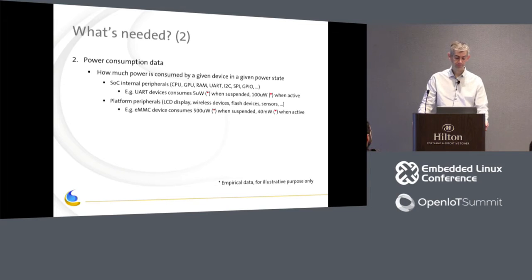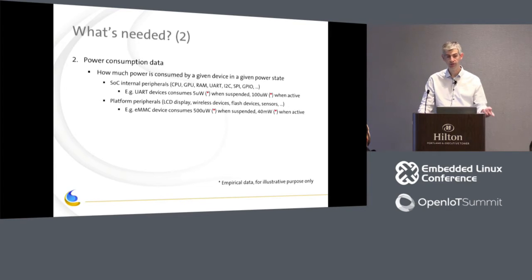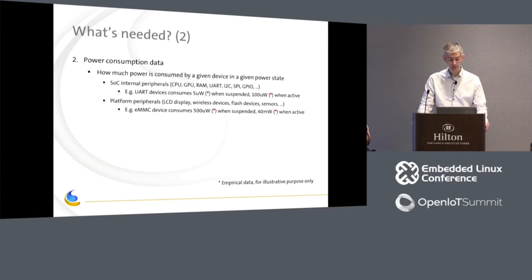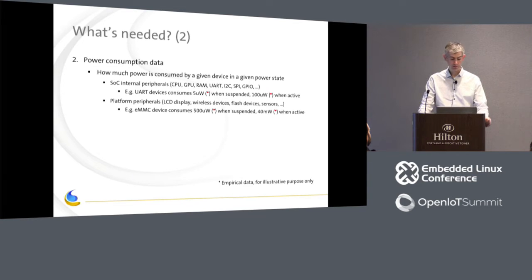We also need power consumption data — how much power a device consumes in a given power state at any time. It's a kind of database where you provide a device name and state, and it returns the power consumption. This includes SOC internal peripherals: GPU, CPU, RAM, I2C controllers, UART, GPIO, and everything. But also all other peripherals embedded in the platform but not part of the SOC — LCD display, wireless controller, flash devices, sensors. For example, a UART device might consume 5 microwatts when suspended and 100 microwatts when active.